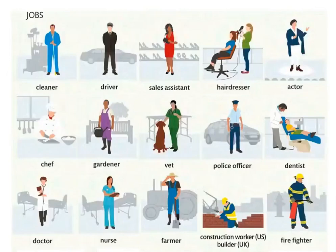Actor — هو الممثل. When we talk about a female, we say actress — أكترس. Chef. Gardener — غاردنر — اللي لها بالغاردن, والغاردن هي جردة (garden).